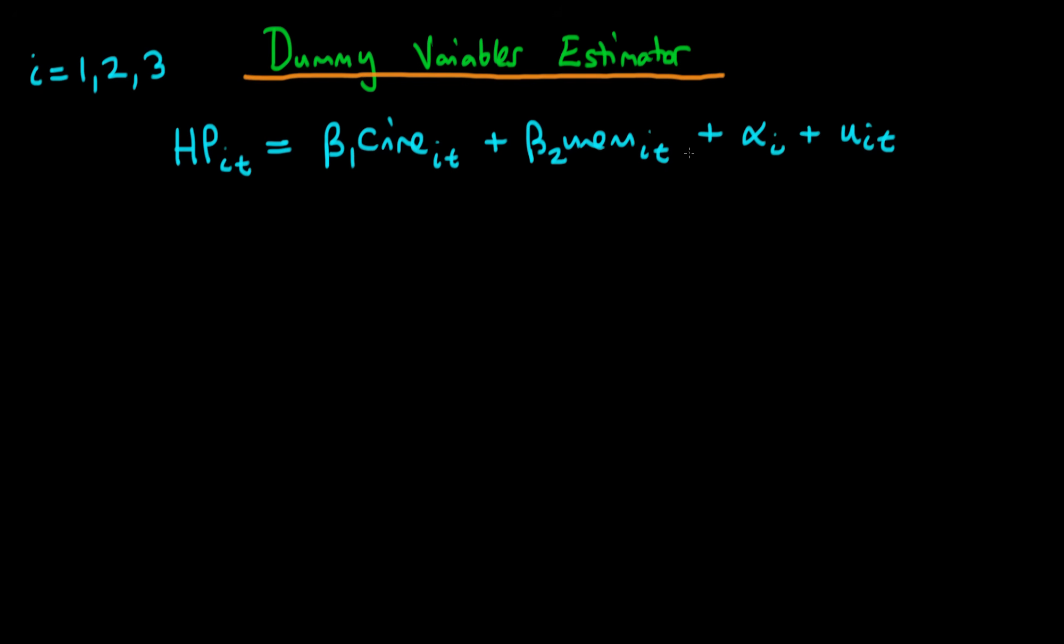And we've spoken about the problems with estimating this equation via pooled OLS due to the covariance between alpha i and one or more of our independent variables which means that the estimates are going to be both biased and inconsistent. And I spoke about in passing a strategy which we could use to actually circumvent this. And it's very similar to that which we used for the time dependent factors.